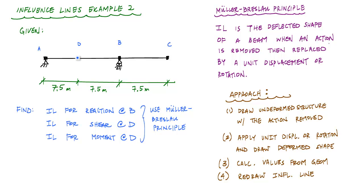The beam has a free end at C, and point D is just a point along the length—it is not a hinge. The span lengths are given here. We want to find influence lines for the external vertical reaction at B, the internal shear at D, and the internal moment at D.